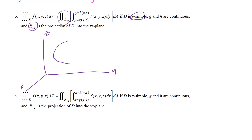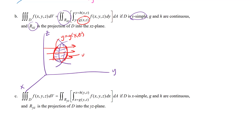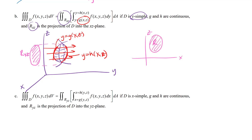For a y-simple region, imagine two paraboloids opening in opposite directions — one in positive y and one in negative y — intersecting there. Going through in the direction of increasing y, where you enter is the lower limit and where you leave is the upper limit. Once that inner integral is set up, you project back into the plane of the remaining variables and set up the outer integrals based on that two-dimensional picture.